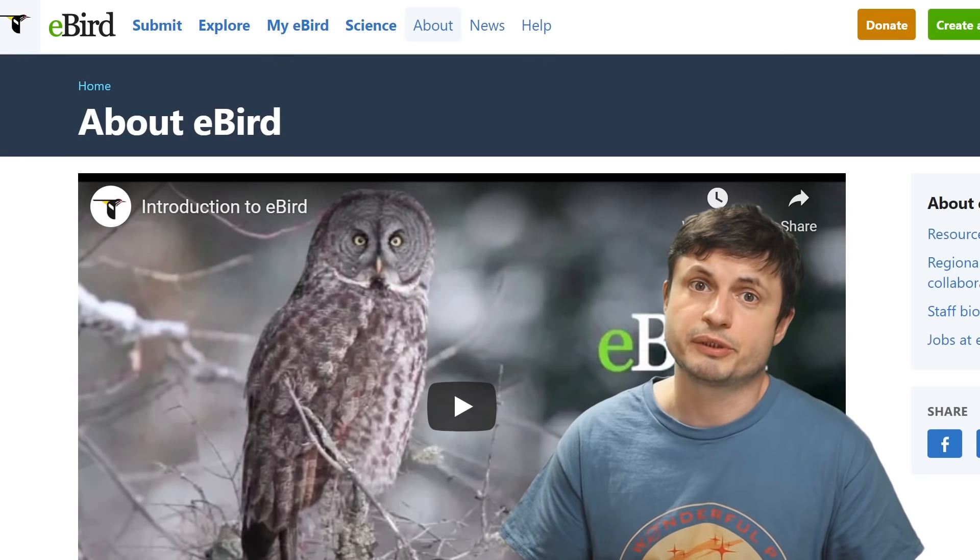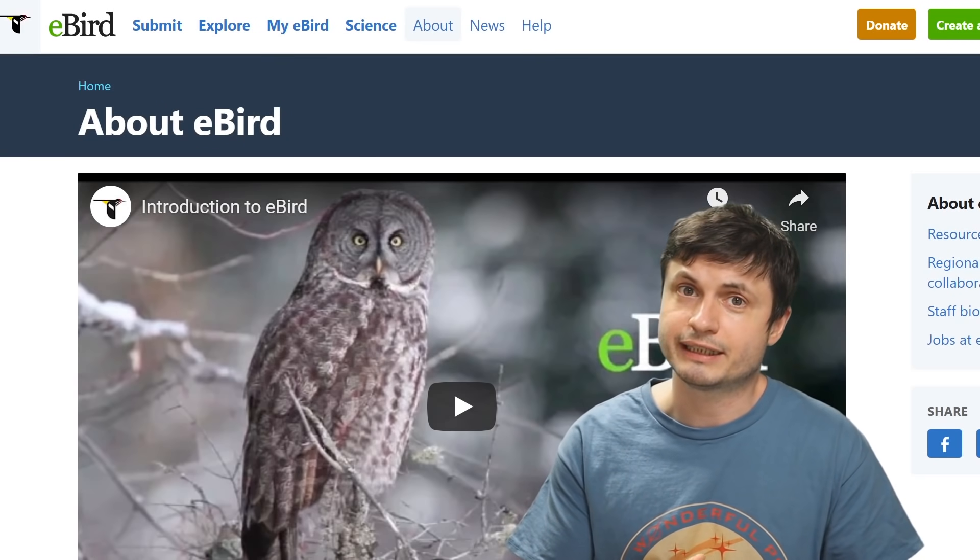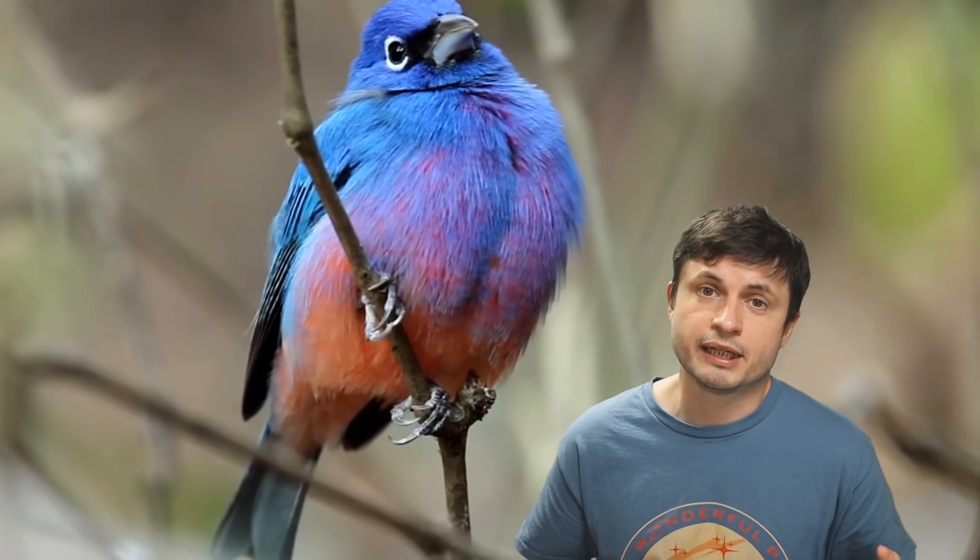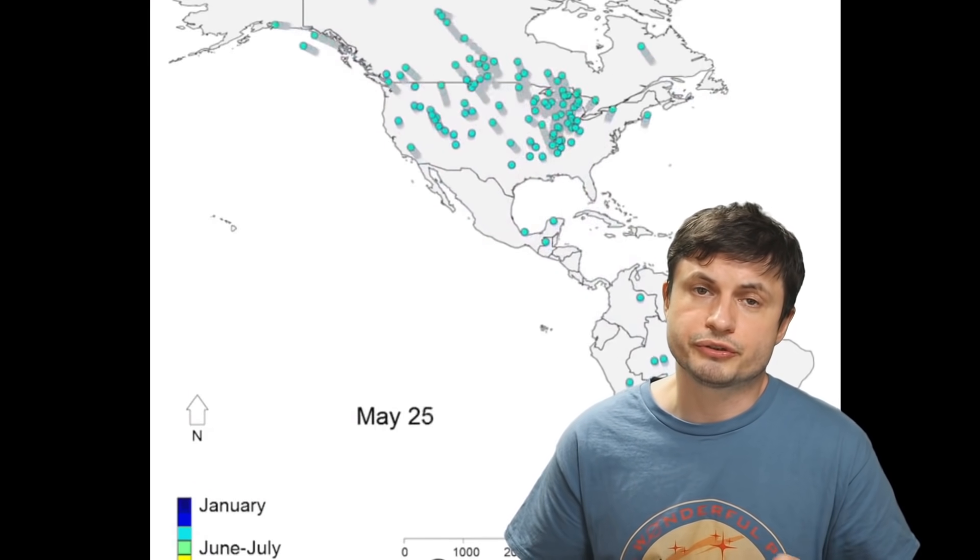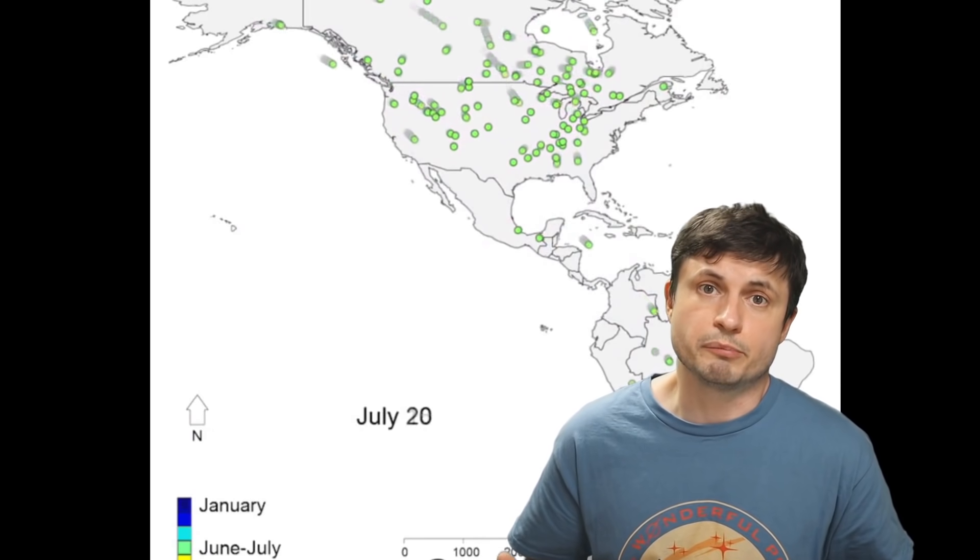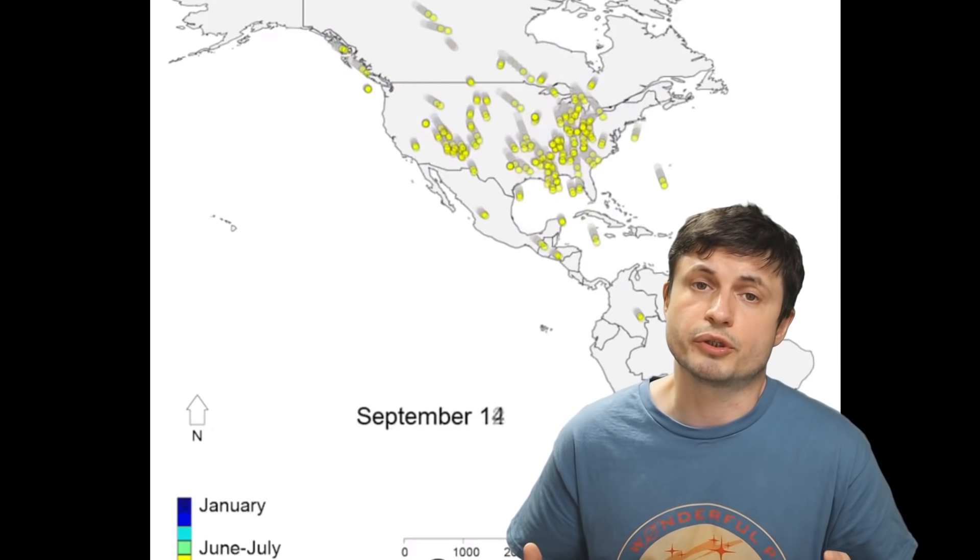And every single year, this project has been growing as more and more members collect the data from around the planet. And the whole point of this project is basically just bird watching, but also collecting the data and sharing it with some of the other bird lovers. This database has been growing quite dramatically over the years. And as more and more people join in, more and more data is going to be available to scientists to essentially study bird patterns and to study the numbers of birds on the planet.